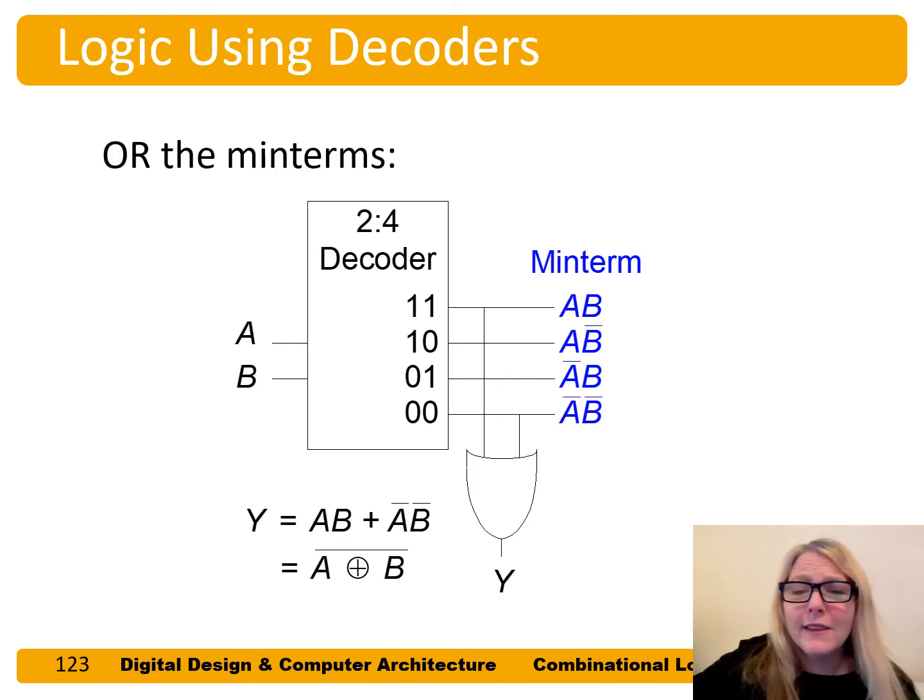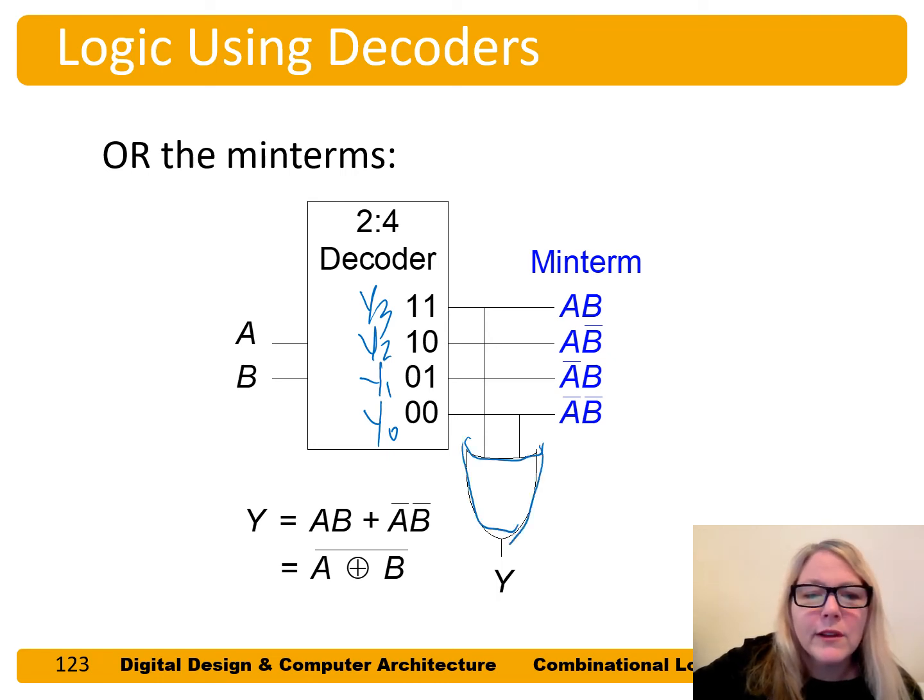And so because these are producing these outputs, Y3, Y2, Y1 and Y0 are producing these minterms, we can use them easily to produce logic if we just add an OR gate. And we just OR together the minterms we want. For example, the XNOR function written in sum of product form and using the XOR symbol and a bar, we can just grab the minterms that we need. We need A and B, which is Y3 or A bar, B bar, which is Y0.